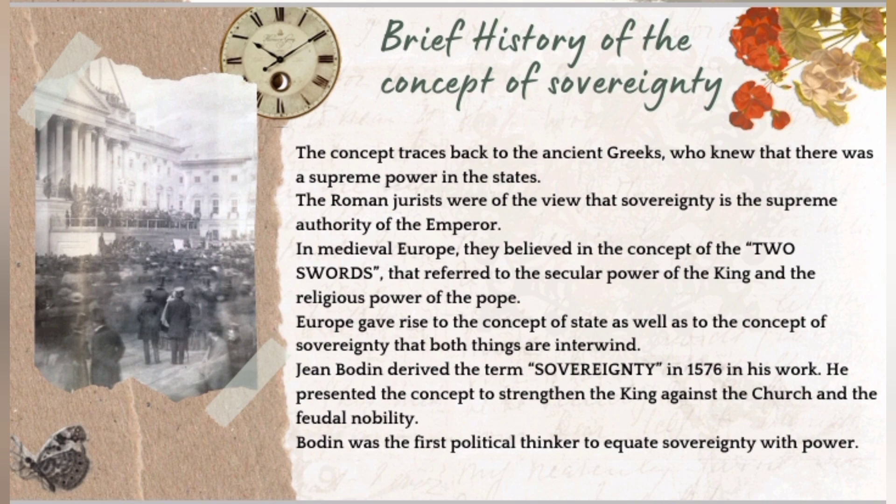In Roman times, jurists said sovereignty is the supreme authority of the emperor. In medieval Europe the concept of the 'two swords' — one representing church power and one representing king's power — was prevalent. Later, as the pope's power was delimited in Europe, it gave rise to both the concept of state and sovereignty, which were interconnected. Jean Bodin derived and formalized the term sovereignty in his work, strengthening the king's position against the church. Bodin was known to be the first political thinker to equate sovereignty with power.